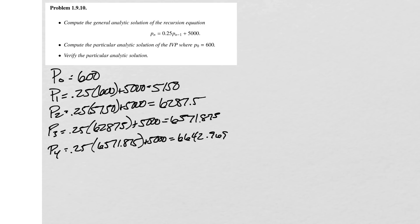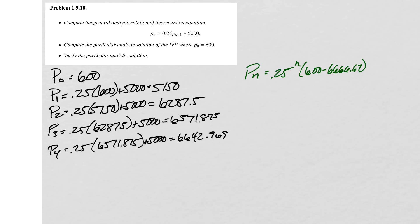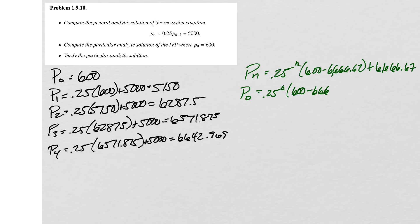Now sliding over and rewriting our particular analytic solution in a different color: p_n = 0.25^n times (600 minus 6666.67) plus 6666.67. To verify, let's substitute some values in. Checking p0: we do 0.25 raised to the 0, times (600 minus 6666.67) plus 6666.67.